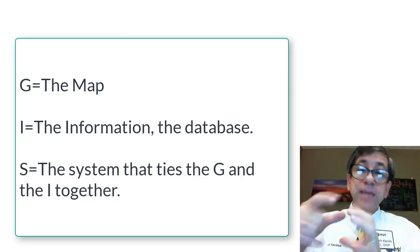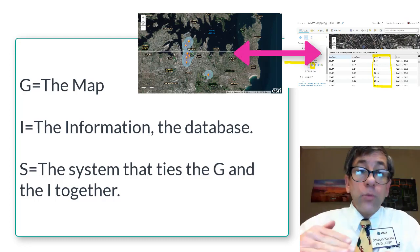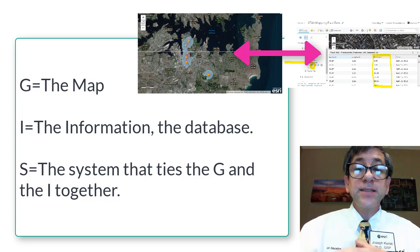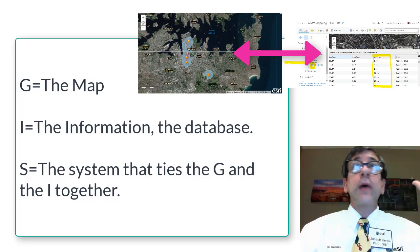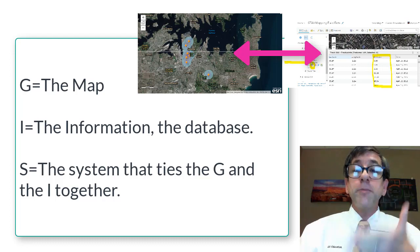The S, or system component, ties the G and the I segments together. One can select a field feature using the map or via a row in the data table. The S component ensures that a GIS is not just a set of graphics floating around in cyberspace, but that the attributes are always linked to the map feature.